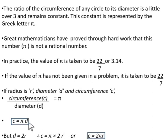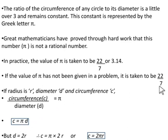So children, if diameter is given, use the formula c = πd, and if radius is given, use c = 2πr. In both formulas there are two variables. In the first formula, if circumference is given you can find diameter, and if diameter is given you can find circumference. Since pi is constant, its value will always be taken as 22 upon 7. In the second formula c = 2πr, if circumference is given you can find radius, or if radius is given you can find circumference.